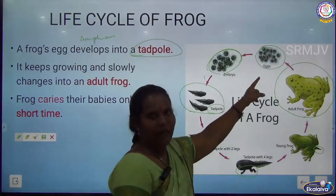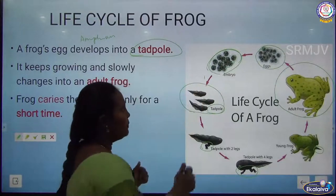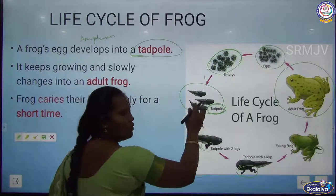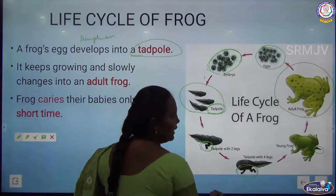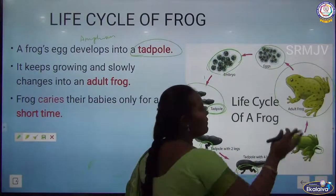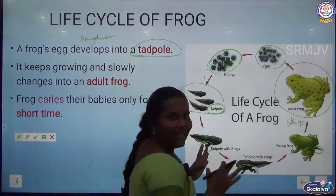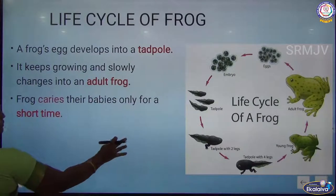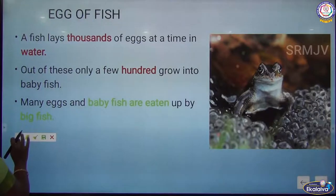The tadpole slowly develops: first it gets two legs, then four legs, and gradually the tail disappears. Finally, the tadpole completely transforms into an adult frog. This is the life cycle of the frog — egg, embryo, tadpole, froglet with legs, adult frog.